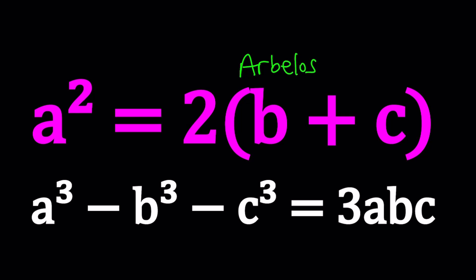Anyways, we have this system: a squared equals two times the quantity b plus c, and a cubed minus b cubed minus c cubed is equal to 3abc.